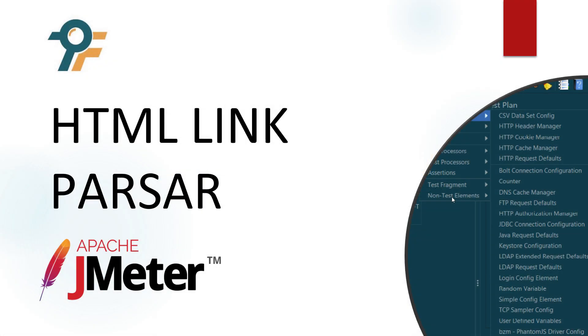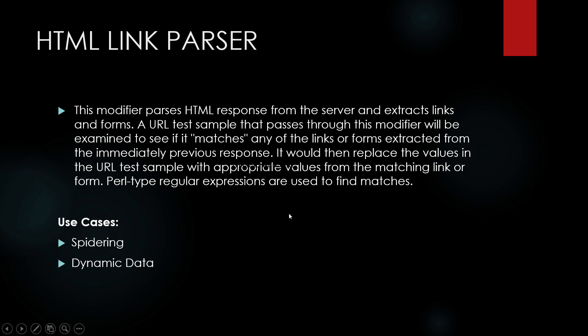Hello everyone, welcome to this JMeter tutorial. In this tutorial we will learn about HTML Link Parser. HTML Link Parser is a preprocessor, which means that it will execute before your sampler.